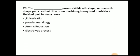Last question: The underlined process yields net shape or near net shape parts so that little or no machining is required to obtain a finished part in many cases. The answer is powder metallurgy. Powder metallurgy is a process in which we get a net shape or near net shape component where very little or no machining is required. That is the beauty of powder metallurgy.